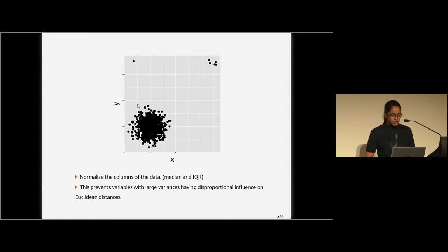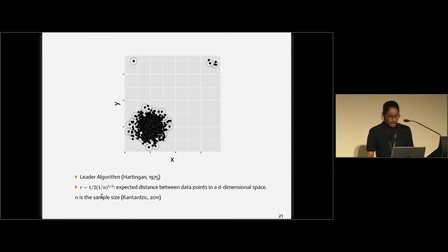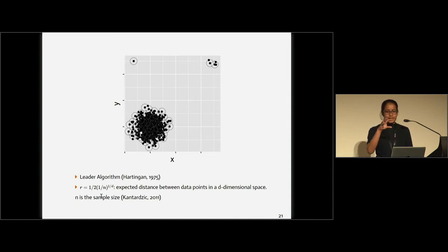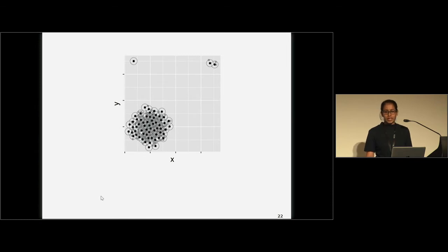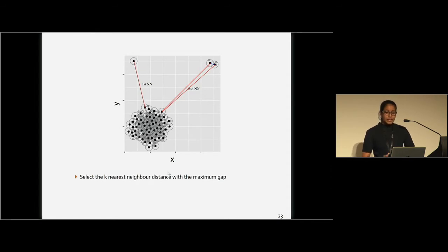Now I have this type of a high-dimensional dataset. As the first step, we normalize the columns of the data. This is to prevent variables with large variance having disproportional influence on the Euclidean distance, because distance is the information we are going to use to detect anomalies. Once we normalize the dataset, we cluster these data points. For this clustering process, we are using the LEAD algorithm. In the LEAD algorithm, it uses a ball with a fixed radius to form clusters, then it selects one member from each and every cluster. Then we calculate the k-nearest-neighbor distance with the maximum gap — we select the k-nearest-neighbor distance that has the maximum gap.